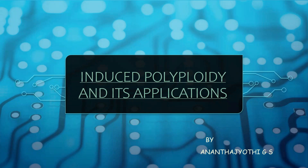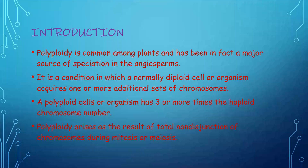Induced polyploidy and its applications. Polyploidy is common among plants and has been a major source of speciation in angiosperms. It is a condition in which a normally diploid cell or organism acquires one or more additional sets of chromosomes, meaning a polyploid cell will have three or more times the haploid chromosome number. Polyploidy could arise as a result of total non-disjunction of chromosomes in mitosis or meiosis.